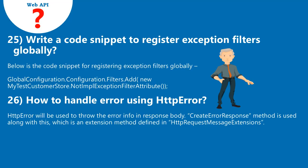Question 26: How to handle error using HttpError? HttpError will be used to throw error info in the response body. The CreateErrorResponse method is used, which is an extension method defined in HttpRequestMessageExtensions.